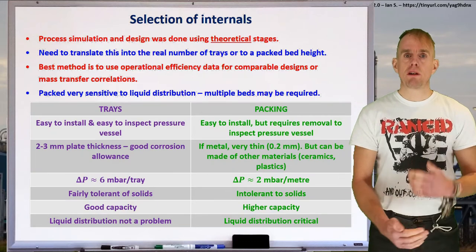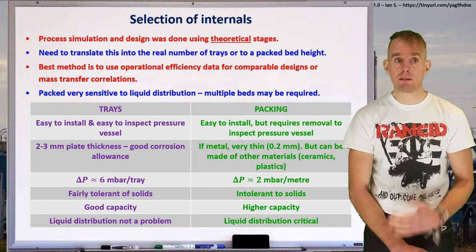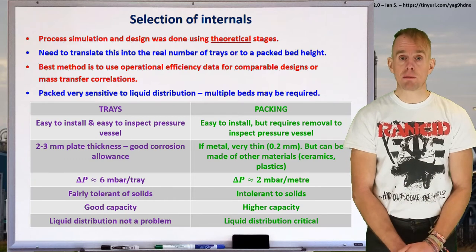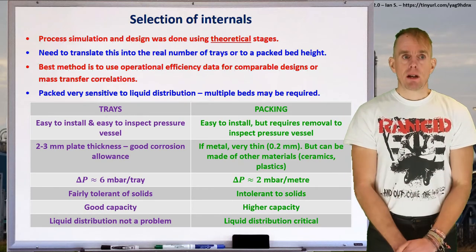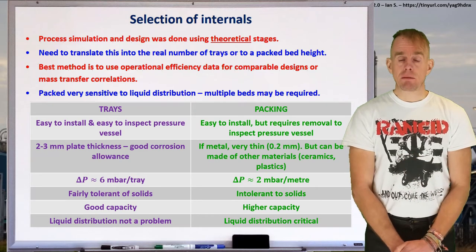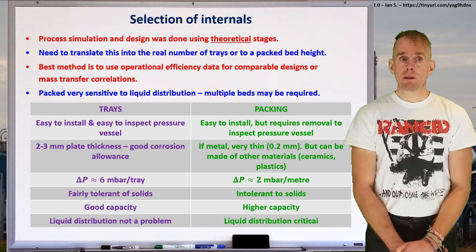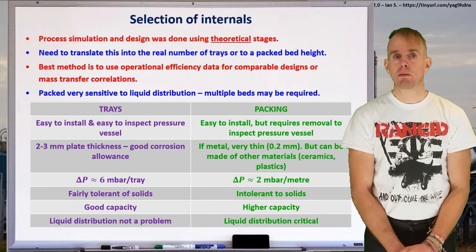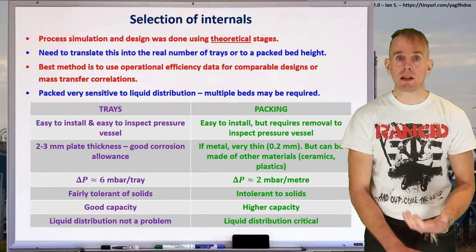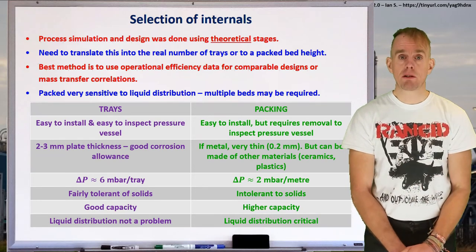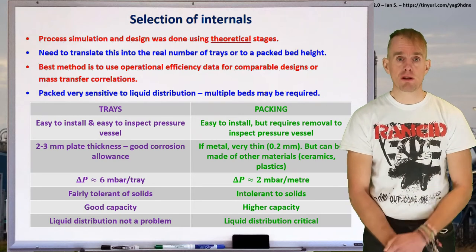Let's think about the pros and cons of each type of column internal, starting with trays. Trays are a very long-established technology. They're easy to install, and it's very easy to inspect the pressure vessel — you've got the tray and you can see the column walls. You've got good corrosion allowance, typically two to three millimetre steel plate. In terms of pressure drop, you're looking at about six millibar per tray. Trays are pretty tolerant of solids, have good liquid capacity, and liquid distribution doesn't figure as a problem. Refining experts love tray systems because they're robust, reliable, industry-tested, and just get on and do the job for 40 years.